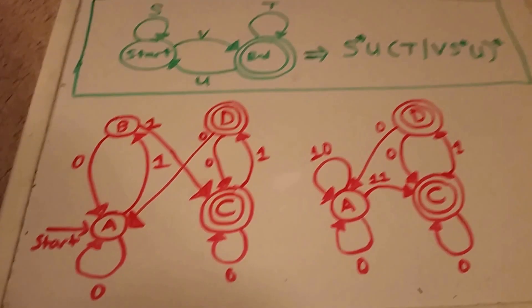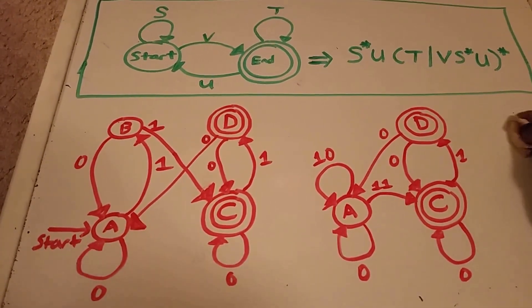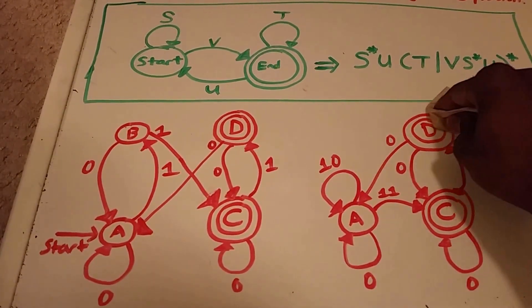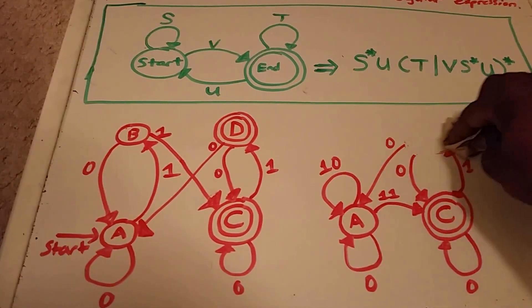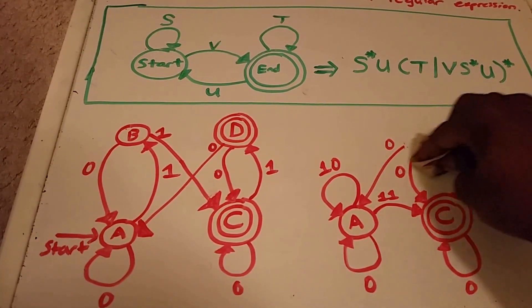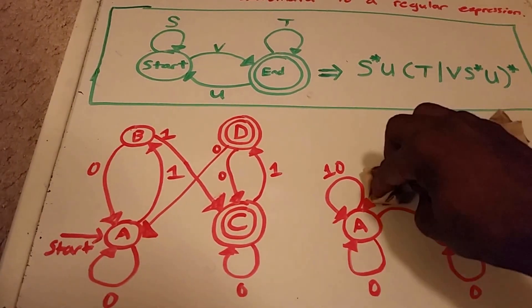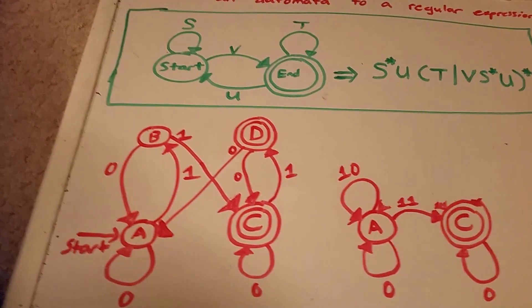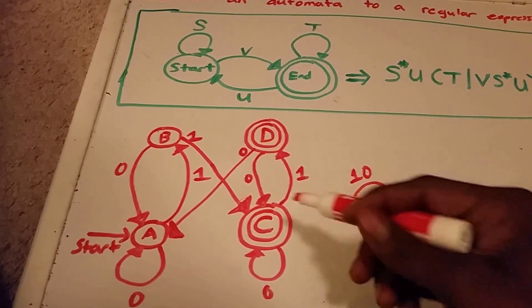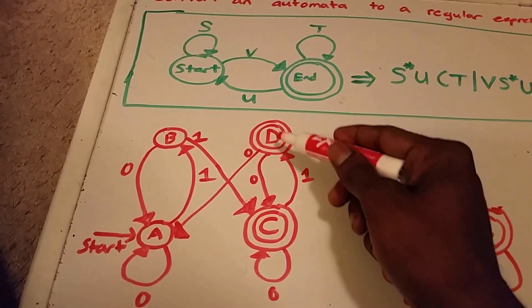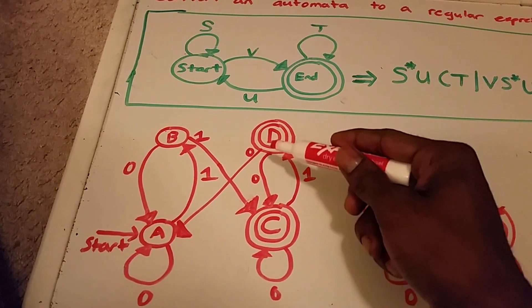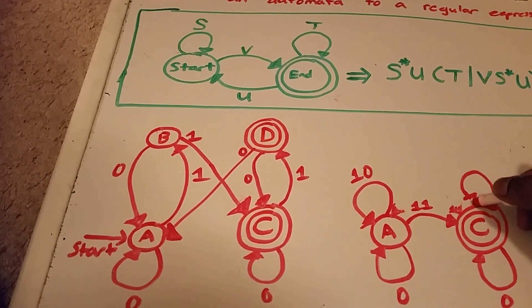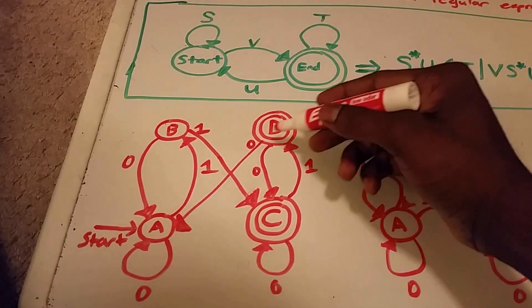So the next thing we want to do is eliminate another state. And I'm going to just choose the end state D to eliminate. So we get rid of that, we're getting rid of three paths. And we can see from state C to D, we could go back to C. So create a little loop here, and it's one, zero.